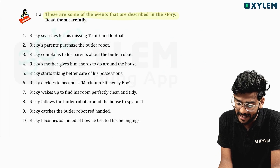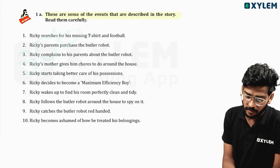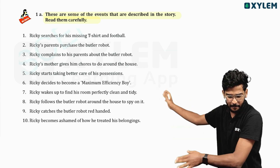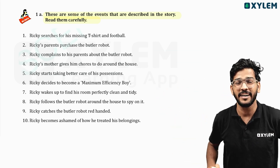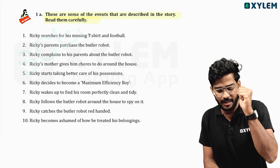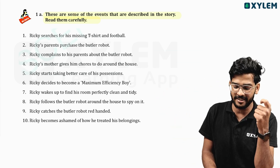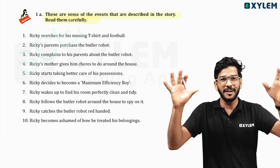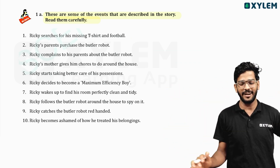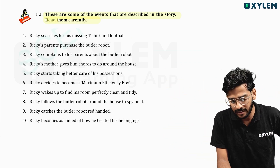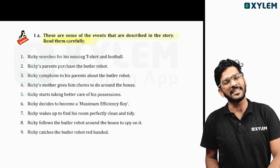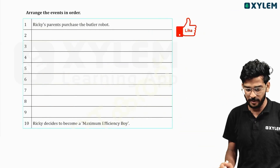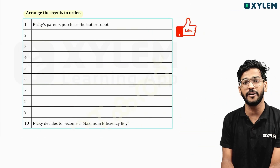These are some of the events that are described in the story. Read them carefully. These are some of the events that are described in the story. You can point out the events, and you are going to show me how to arrange the events in order.